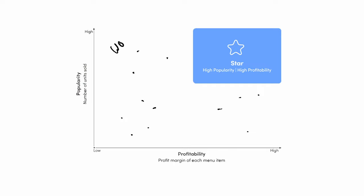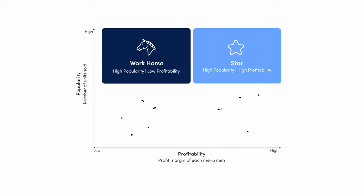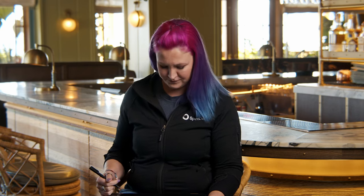Next to that, we have our workhorses. These workhorses are high in popularity, but they don't make us a ton of money. If we can, let's look at those recipes. Is there a way we could adjust them to make them a little bit more profitable? Maybe we can increase the cost by 50 cents or a dollar without making any huge changes that will shock your guests.